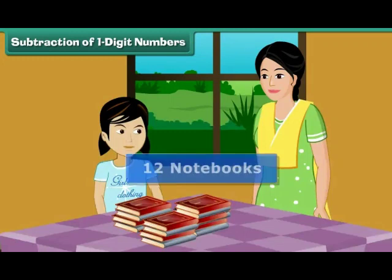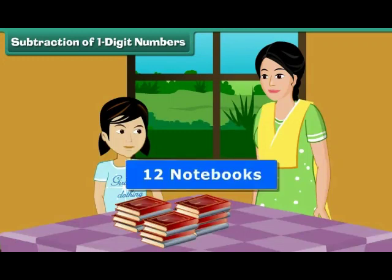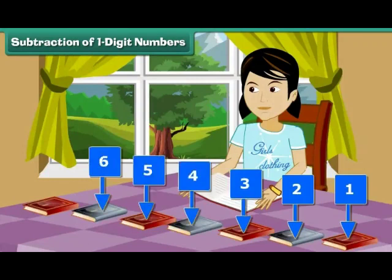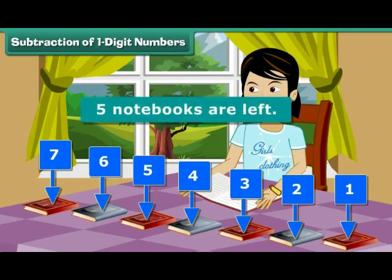Priya's mother bought her 12 mathematics notebooks. She has used up 7. How many notebooks are left? 12 minus 7 is equal to 5. 5 notebooks are left.